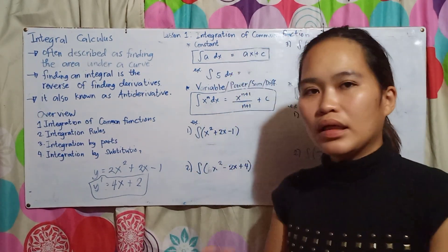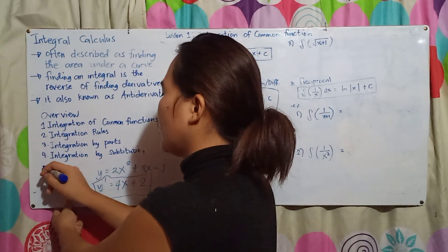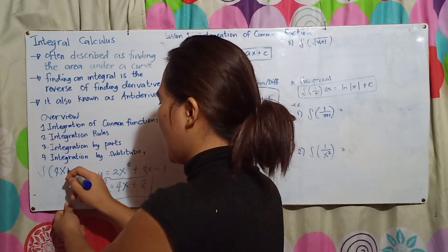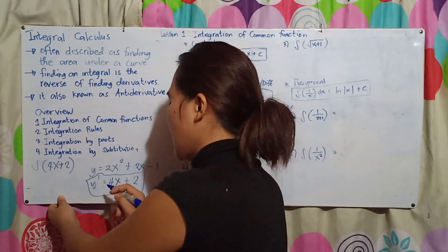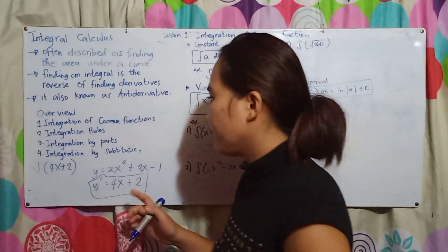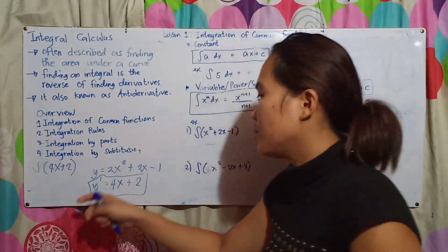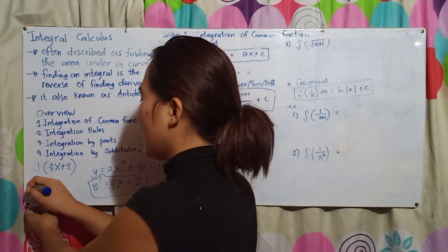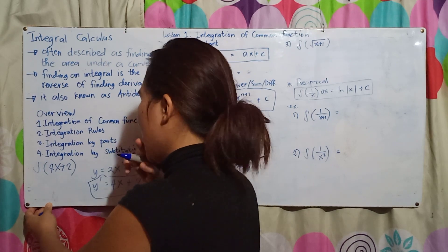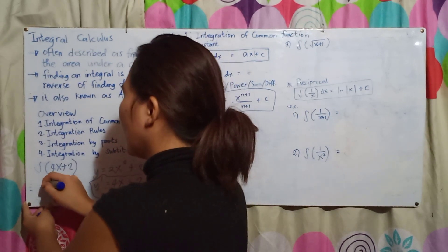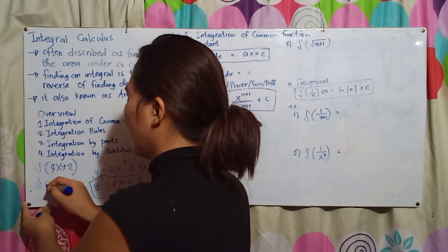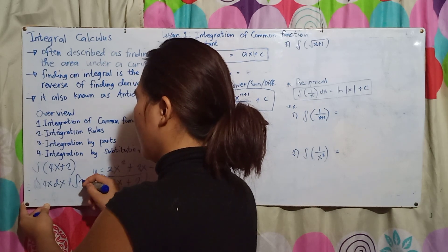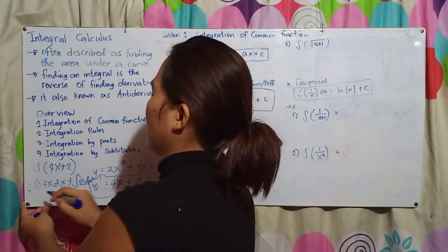Now, if we take that derivative result 4x + 2 and integrate it back, we should return to our original function. So: integration of 4x dx plus integration of 2 dx.